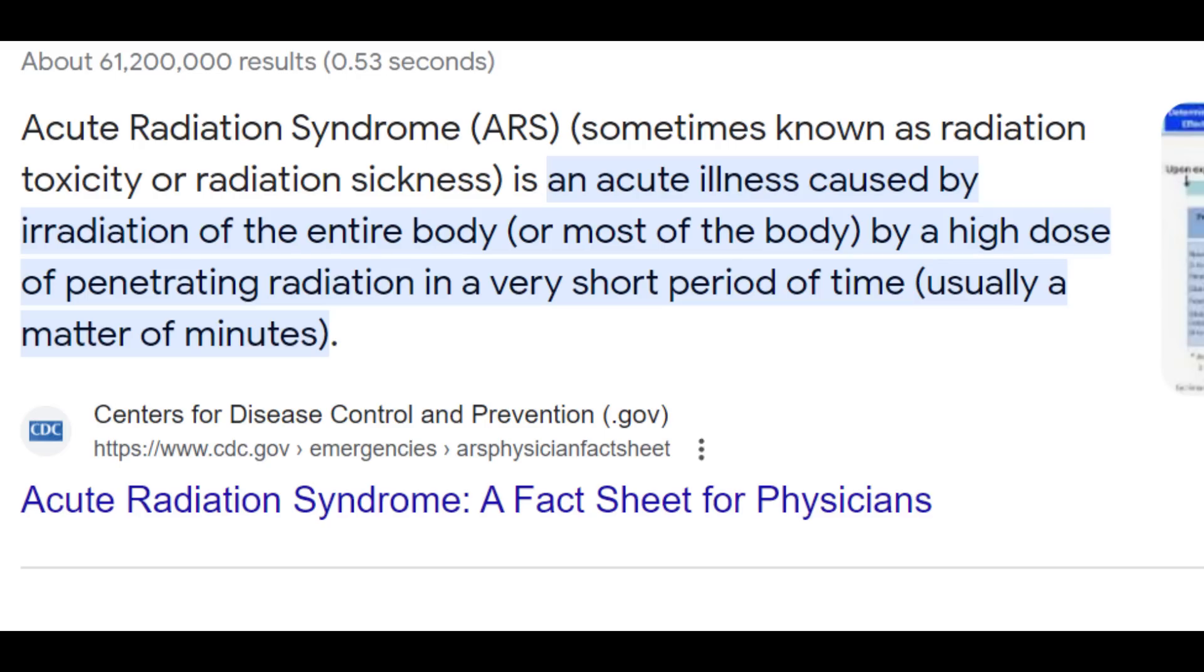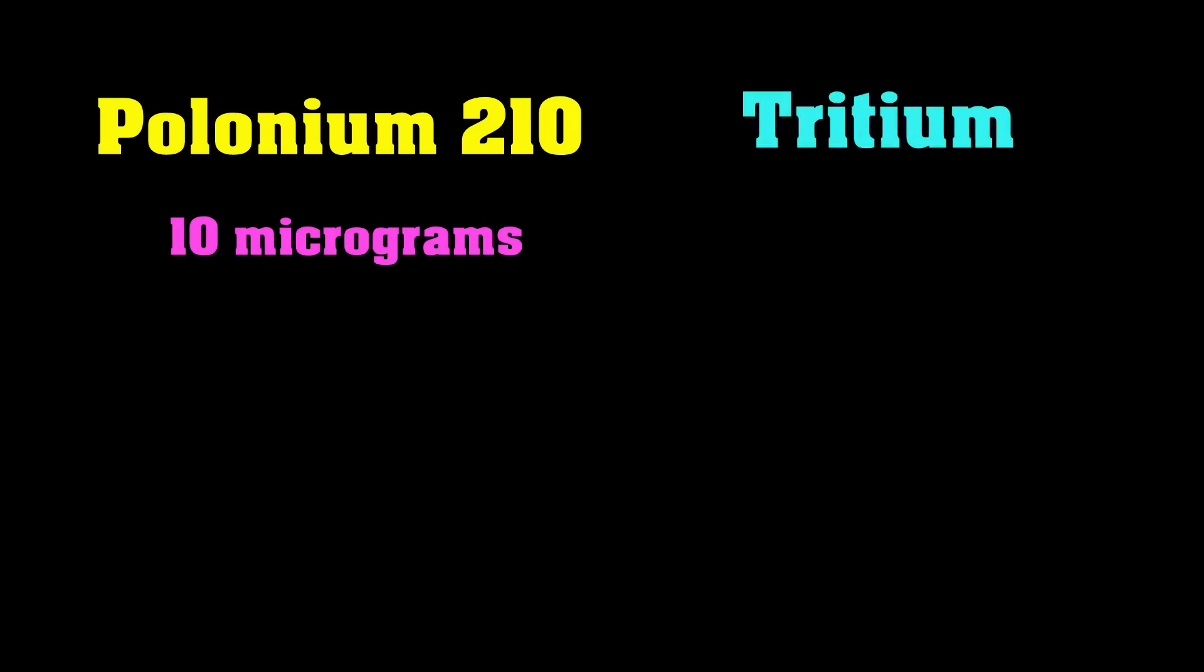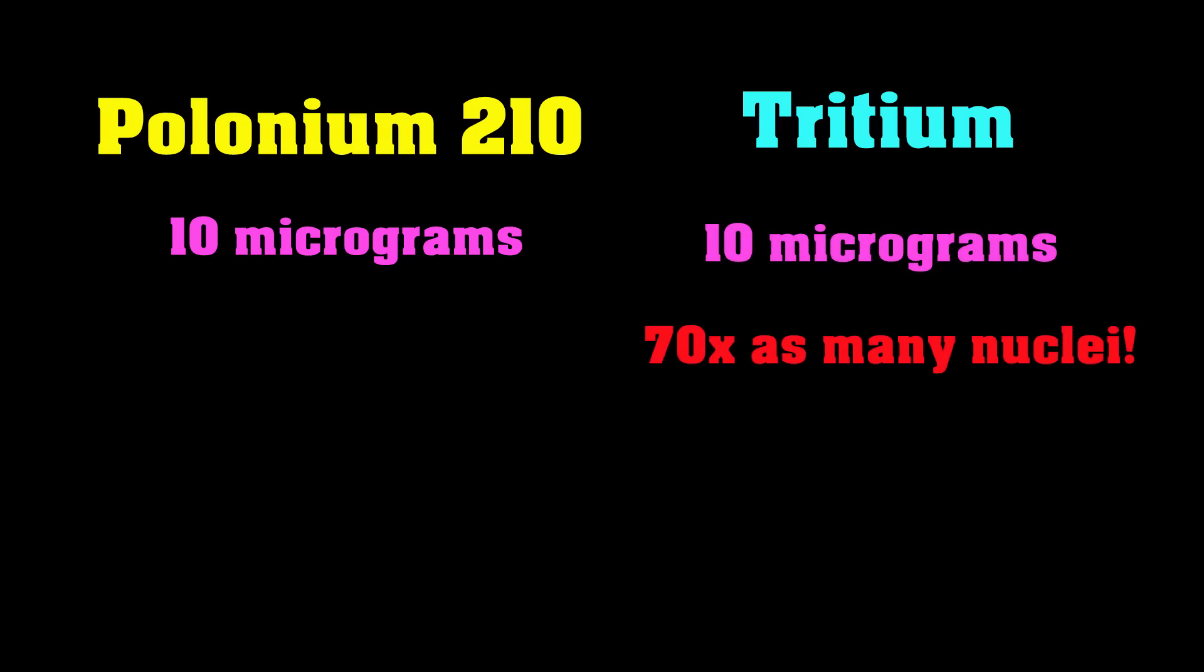And if you get enough of that, you get burns. Get too much of it, and you get acute radiation poisoning. And too much of that, and you die. So, how does tritium compare to polonium in terms of its ability to break bonds per gram of material?